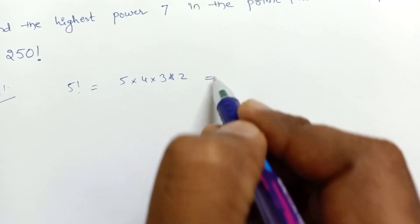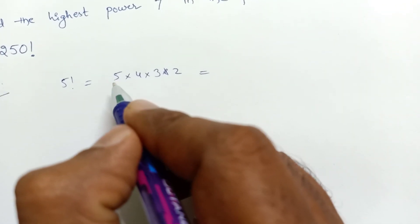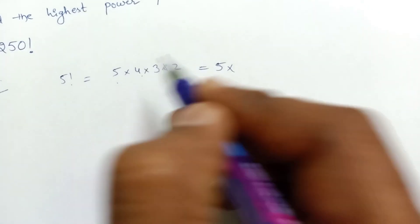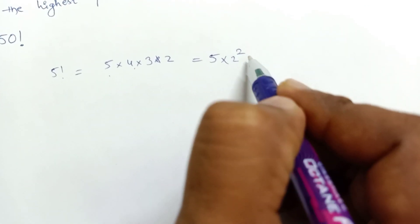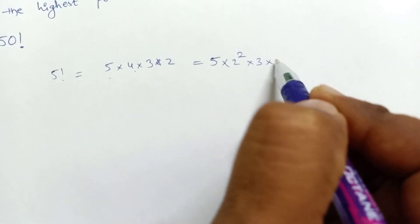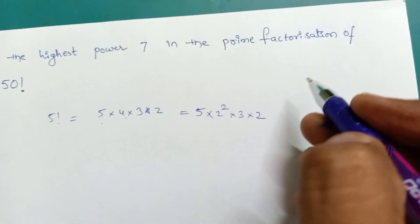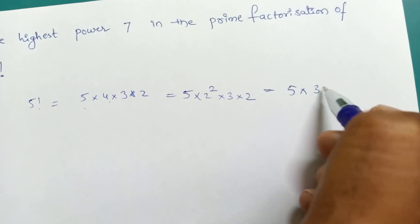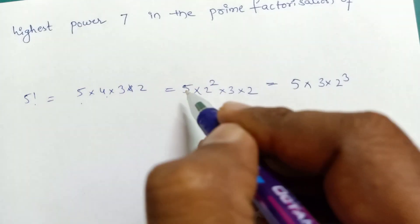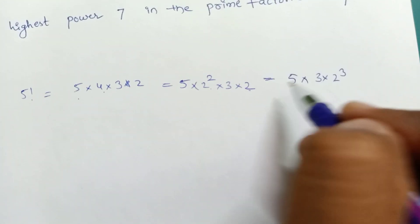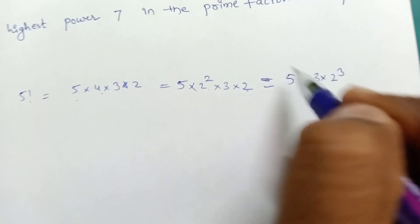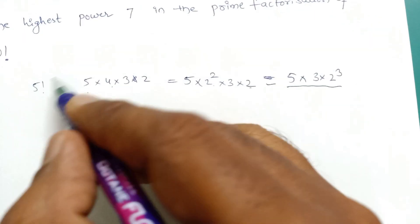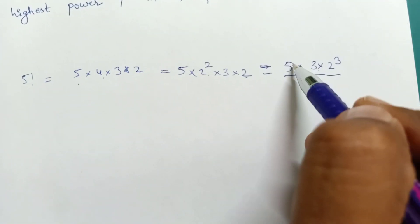Now, 5 factorial equals 5 times 4, and 4 equals 2 squared. So we have 5 times 2 squared times 3 times 2. Looking at the same prime numbers, the answer is 5 times 3 times 2 cubed.